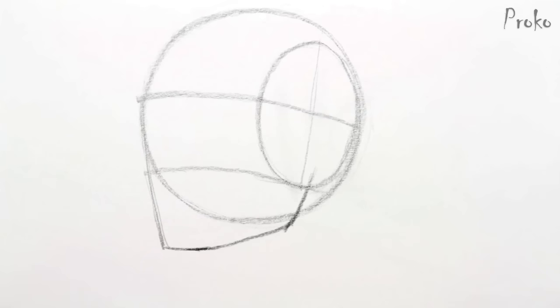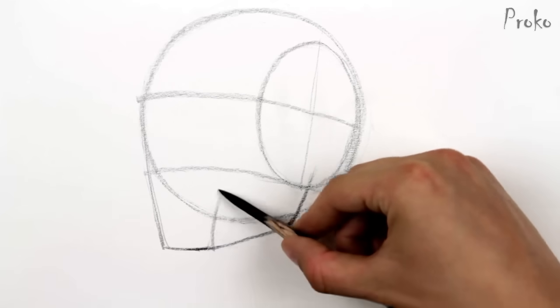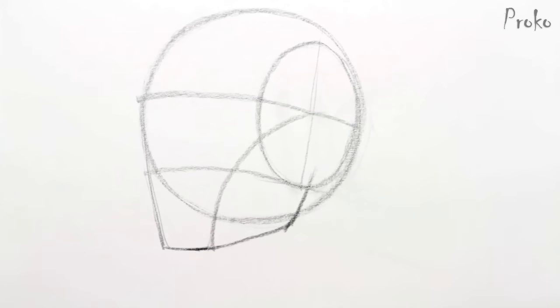We've already found the side plane of the cranium. Now we need to do the same thing with the cheek and jaw area. There's a rhythm that starts at the top of the ear and curves down to the outside of the chin.